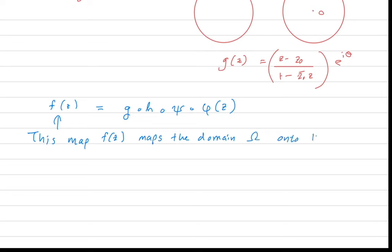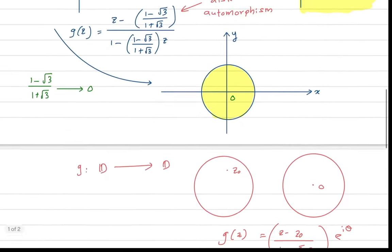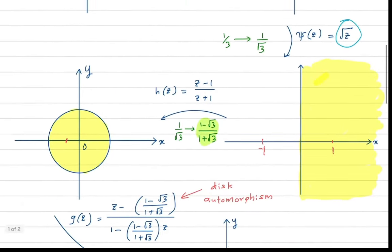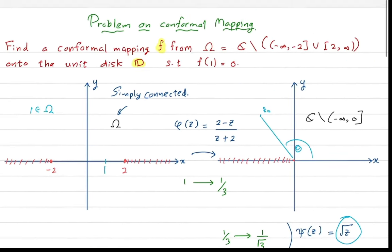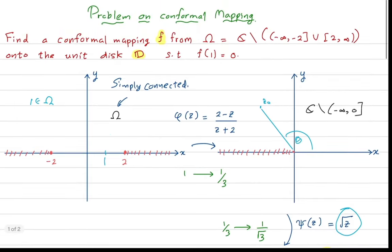This composed map f(z) maps the domain omega onto the unit disk and satisfies f(1) = 0. This is an interesting problem on conformal mappings. If you have any questions, you can mention them in the comment section. Thank you for watching.